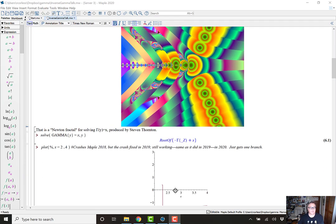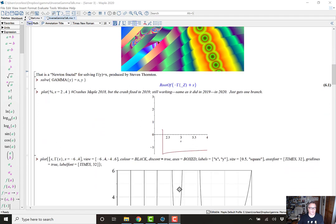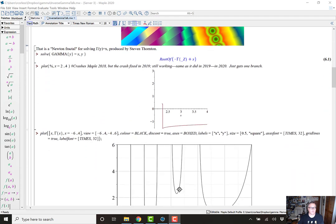Anyway, if you ask Maple to solve gamma of y equals x, it says, sure, no problem. That's root of x minus gamma of underscore z. And for many purposes, root of really does give you an inverse. If you plot it, well, that now works. It didn't used to work. You used to crash Maple. But it now works. But you only get one branch. And really only part of one branch. So it's kind of strange that it does that.